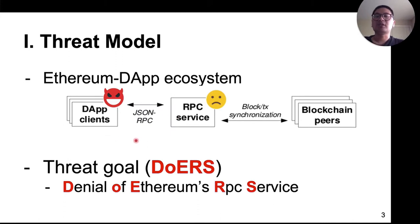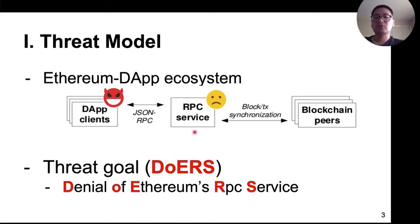This figure shows a typical DApp ecosystem. The DApp clients are connected with one RPC service, and then the service is connected to many blockchain nodes. The RPC service can relay the transactions sent from the DApp clients to the blockchain network. It also can serve queries from the DApp clients for the blockchain state. Therefore, this highly centralized RPC service in the middle can be a single point of failure.